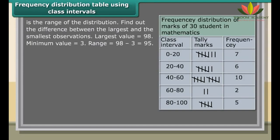The number of times a particular observation occurs in a given data is called its frequency. A frequency distribution shows how frequently a particular item occurs in a group.